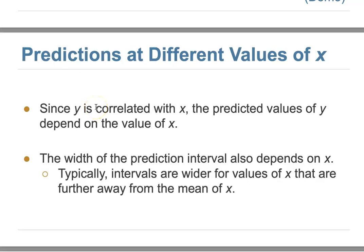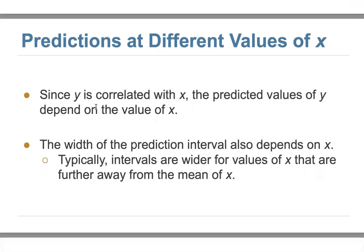Continuing, for our predictions: you can provide one x value and we give you a prediction interval. But according to different values of x, since y is correlated with x, the predicted value of y depends on the input of x. This means the width of the prediction interval also depends on x.